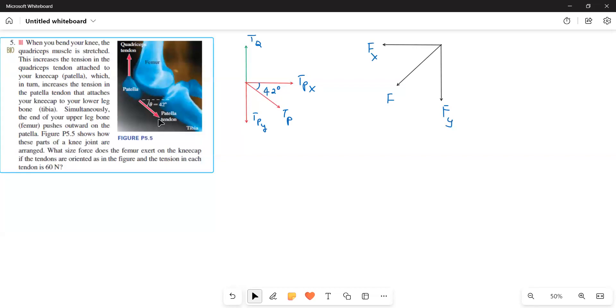I resolved this force into two components, TPx and TPy. He gave each tendon exerts a tension force of 60 N. So your TP is equal to 60 N and then TQ is also 60 N. We have to resolve them, TPx and TPy. TQ I need not because this is straight upwards, same force TQ is equal to 60 N.